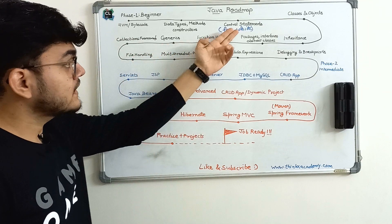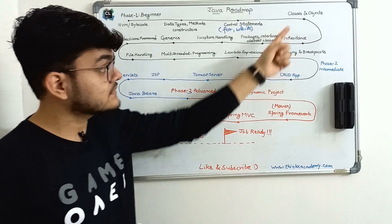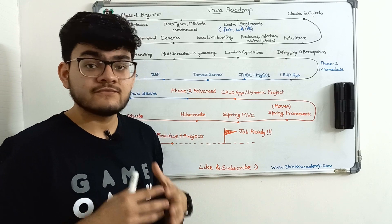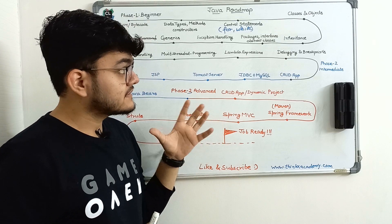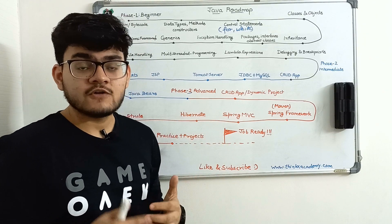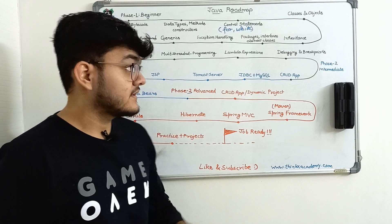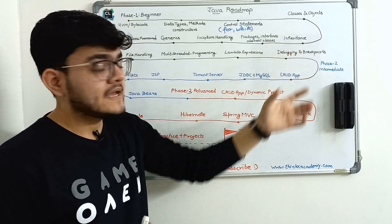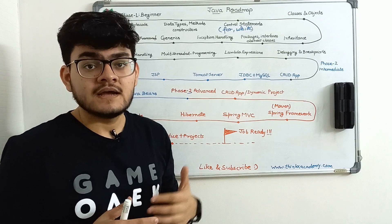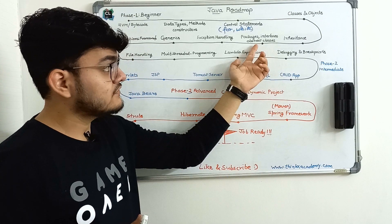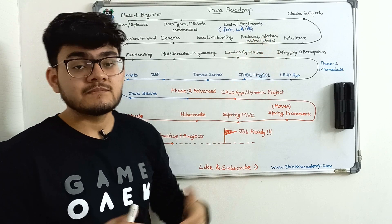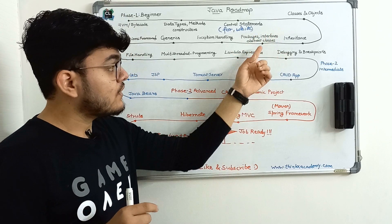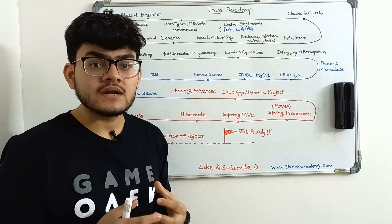Now let's move on to classes and objects, which is a very important topic. Java is fully object-oriented, so it supports classes and objects and you will be playing around with them for the whole of your Java career. You will have to understand how to create classes, and then move on to inheritance — which means how to create an inherited class. Then you will study packages, interfaces, and abstract classes. When studying these concepts, you will also have to focus on how they are applicable and what is their use.